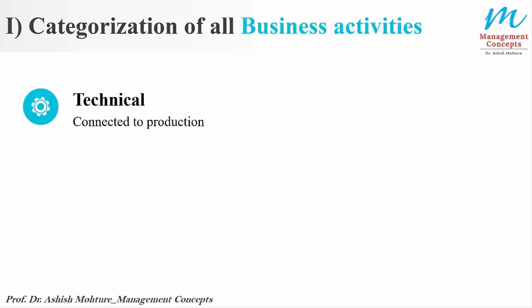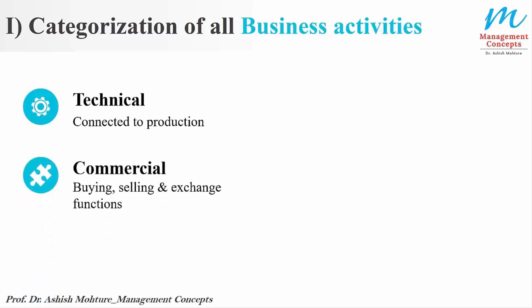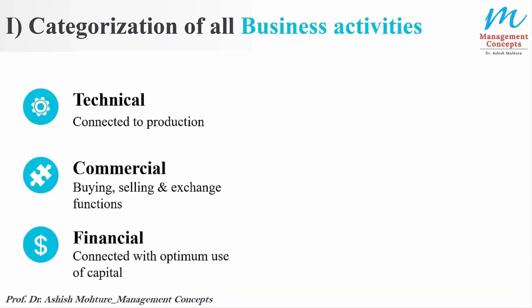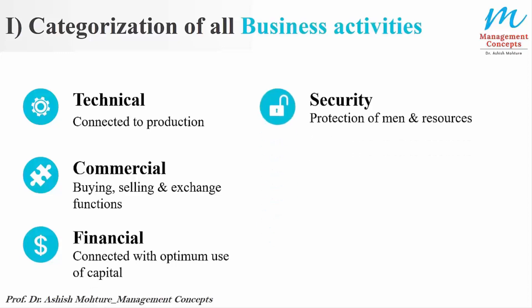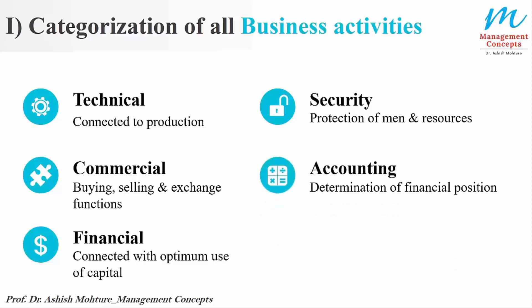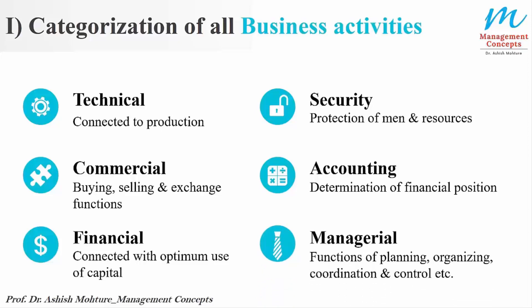Henry Fayol categorized business activities as follows. The first is technical, which is related to production. Second is commercial, related to buying, selling and exchange of functions. Third is financial, related to optimum utilization of capital. Fourth is security, which is about protection of men and resources. Fifth is accounting, related to the financial position of the organization. And the last is managerial, which is purely related to planning, organizing, coordinating, controlling, and so on.